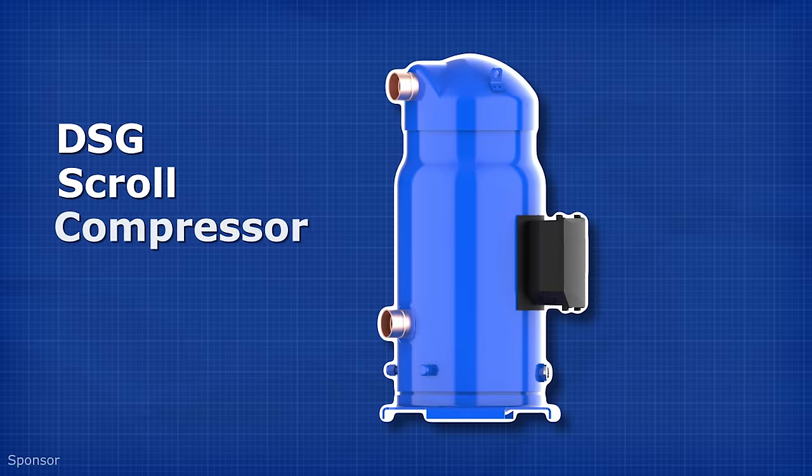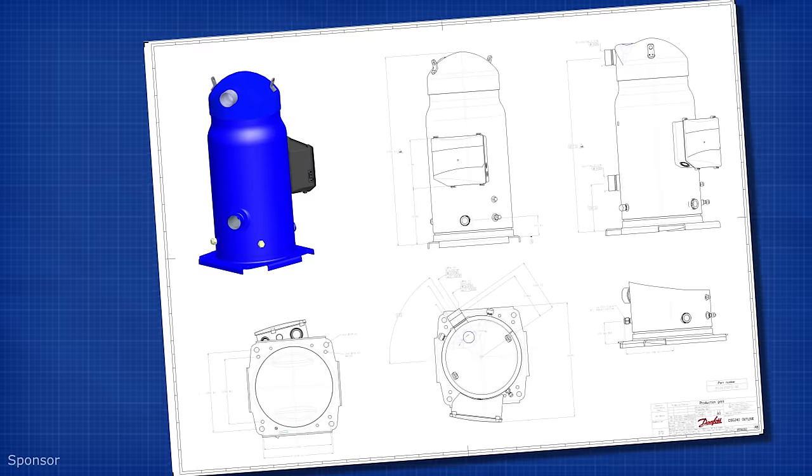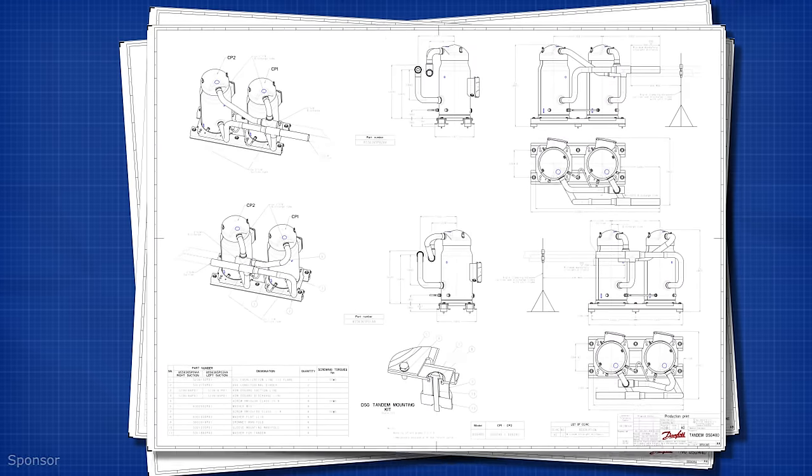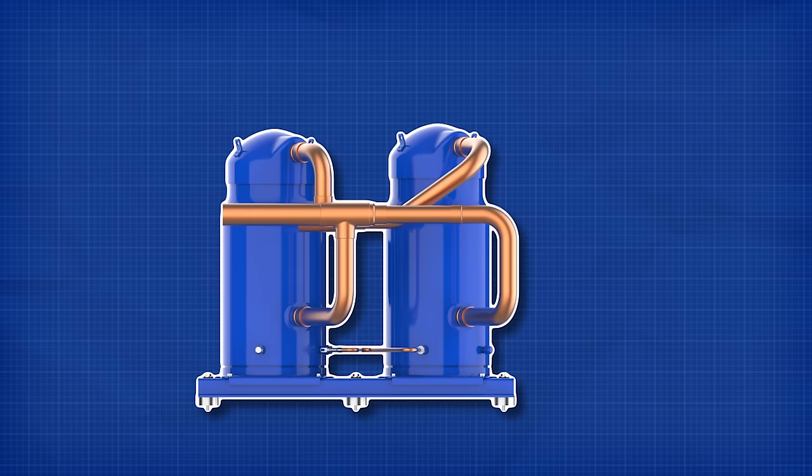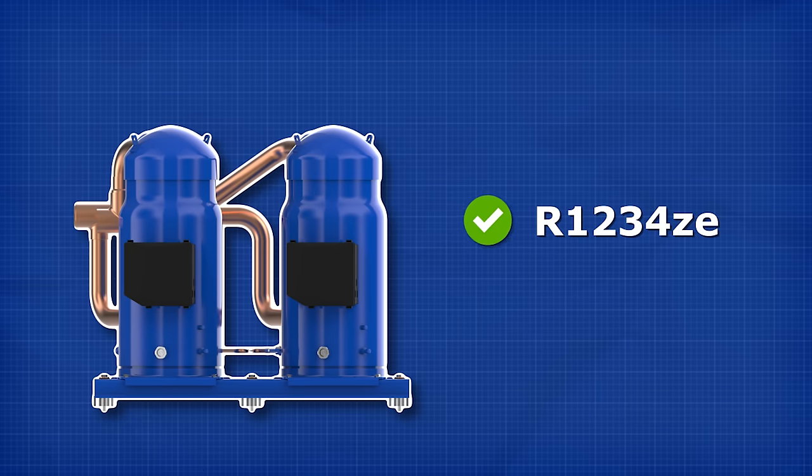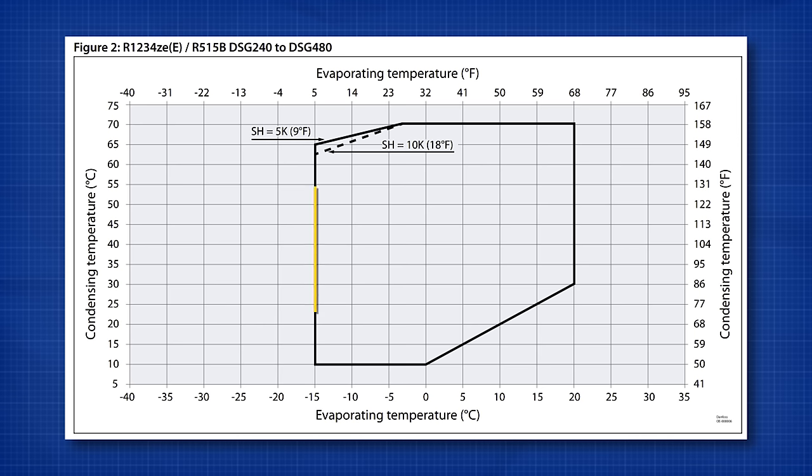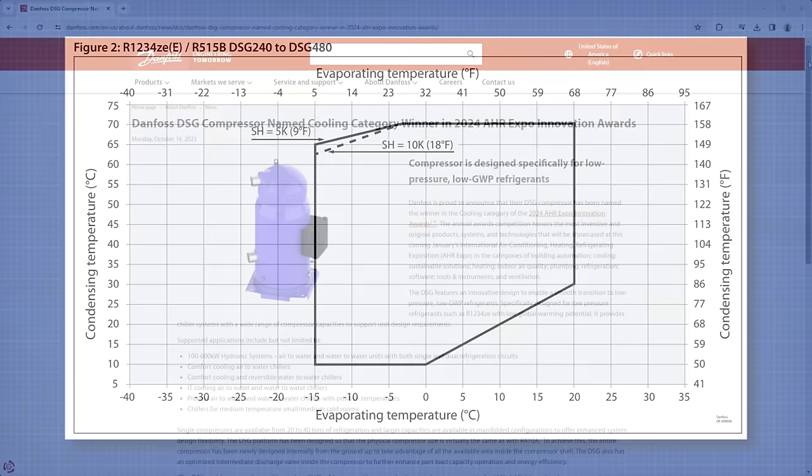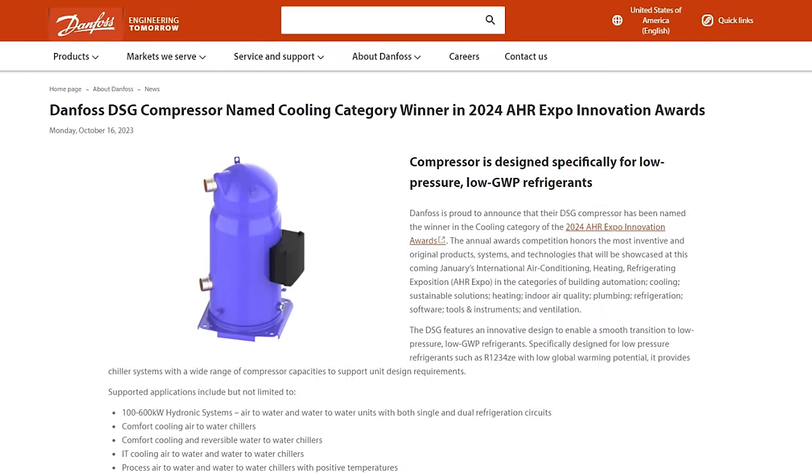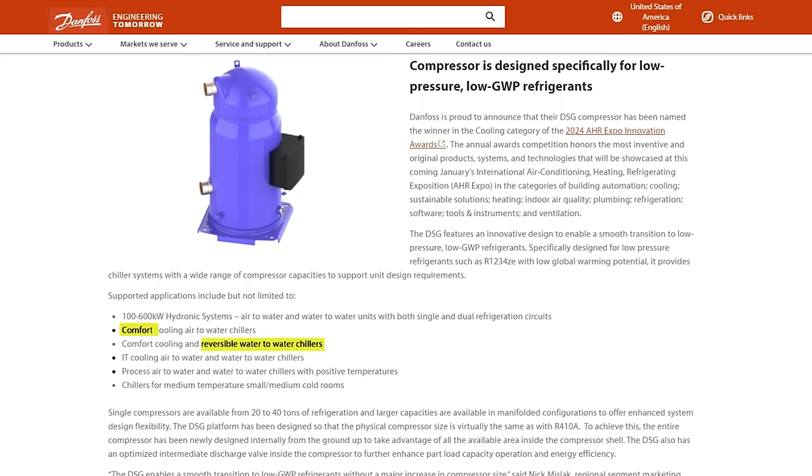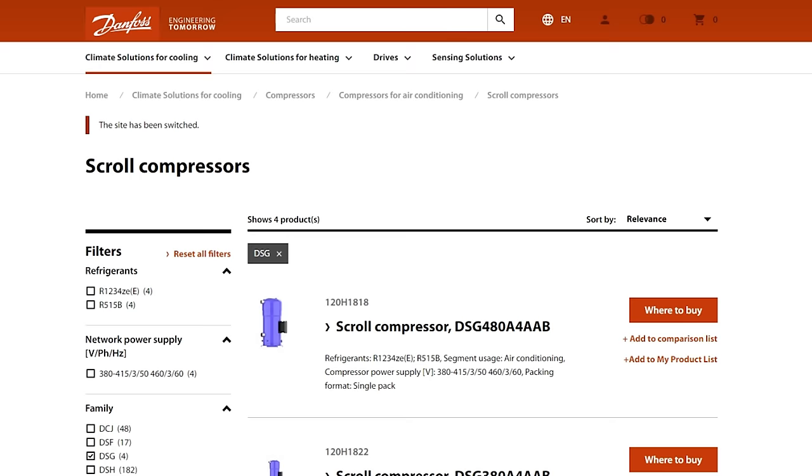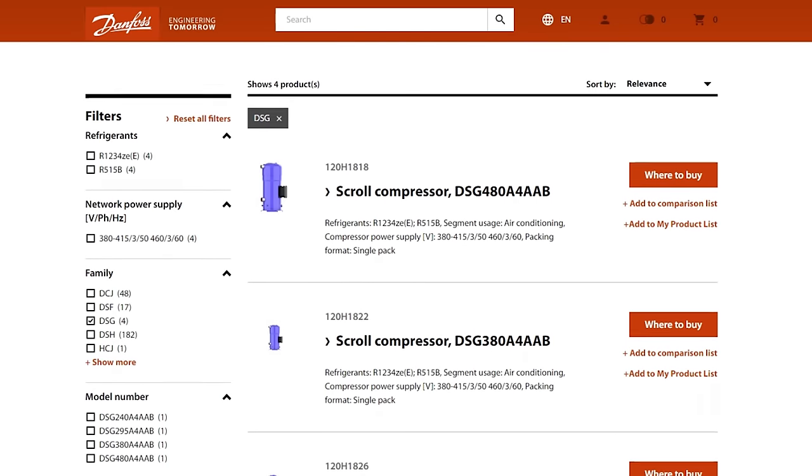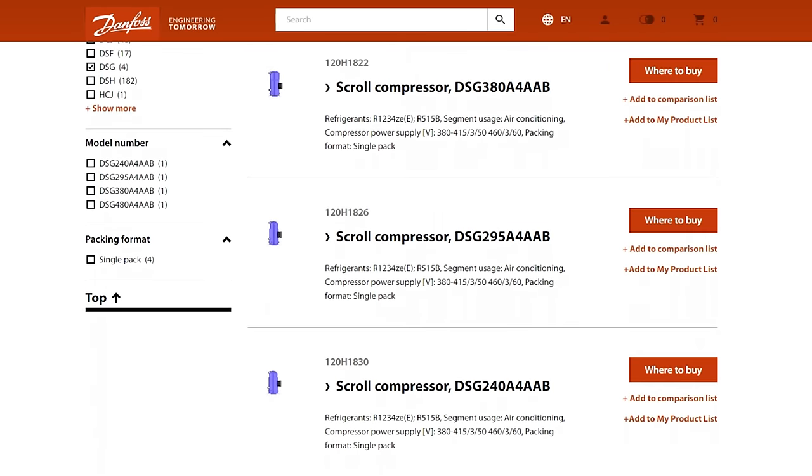With the DSG Scroll Compressor by Danfoss, our sponsor, you can design a new generation of sustainable scroll systems, increasing energy efficiency with ultra-low GWP refrigerants. The DSG Scrolls feature a broad operating map, making them perfect for ultra-low GWP chillers and heat pumps. Their ability to handle reversible applications is perfect for comfort, IT and process cooling.